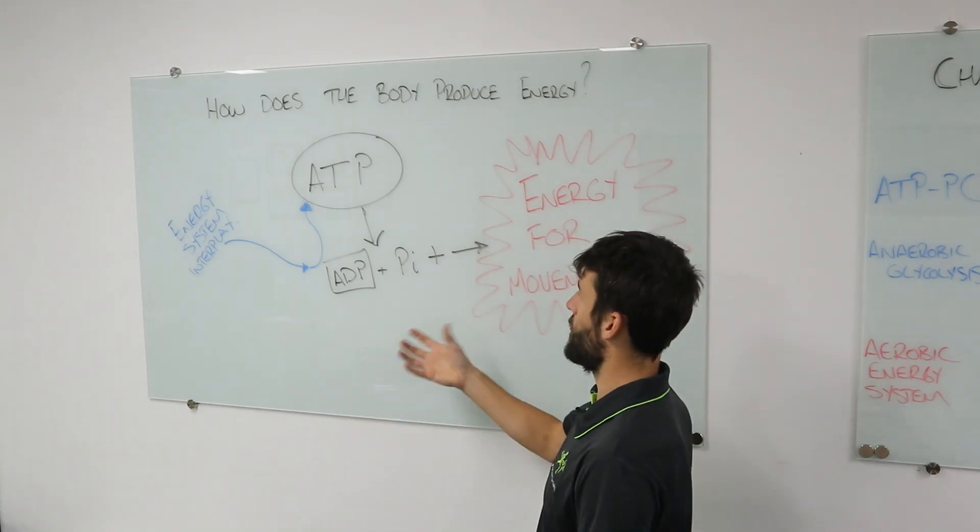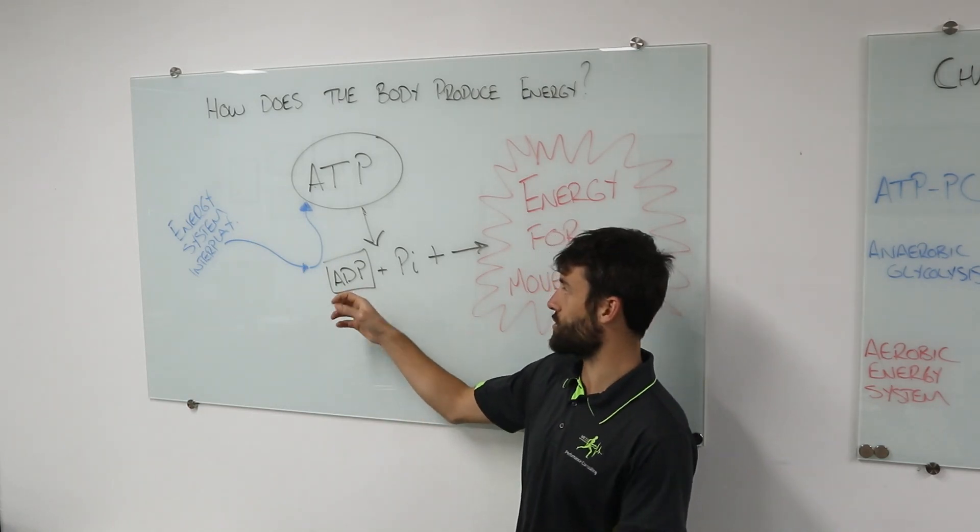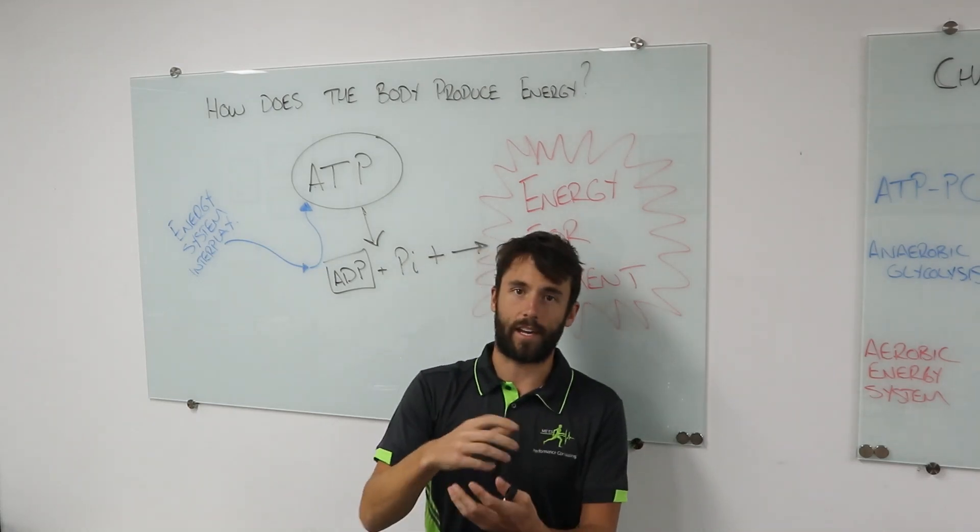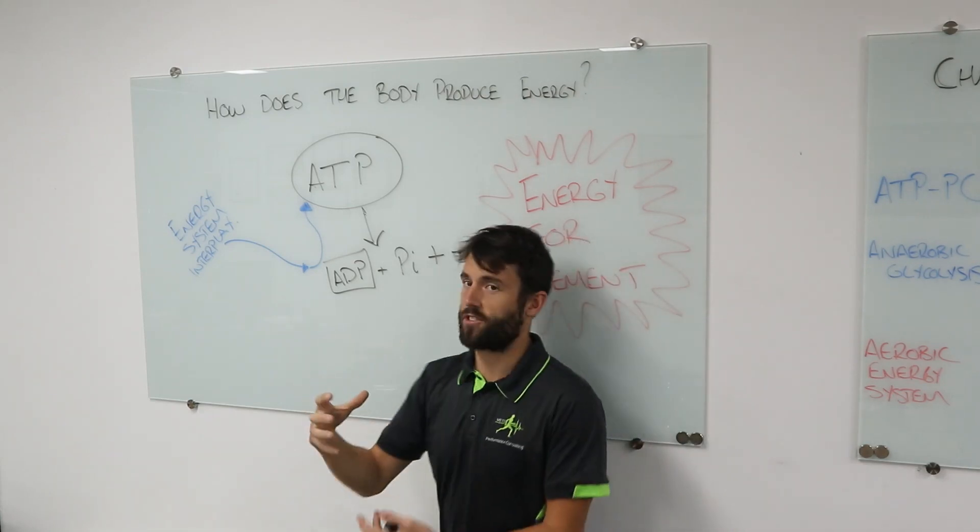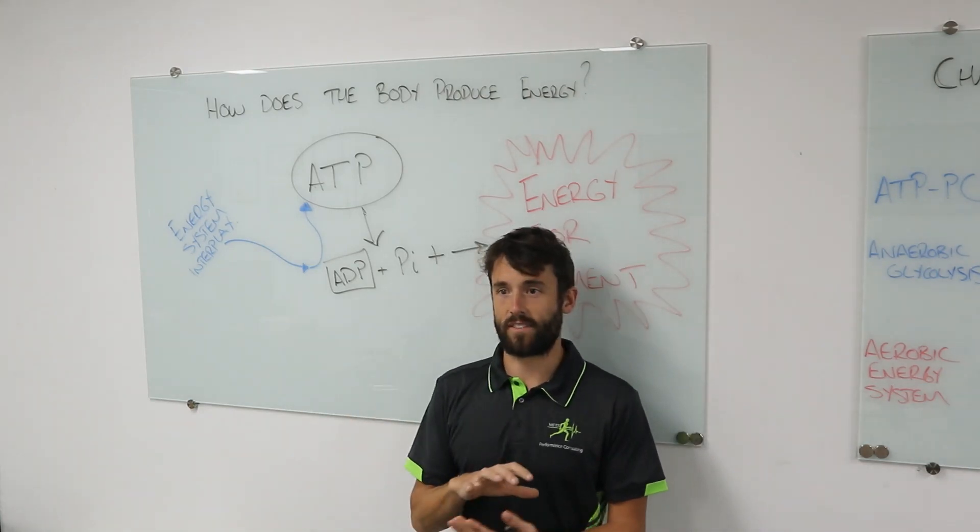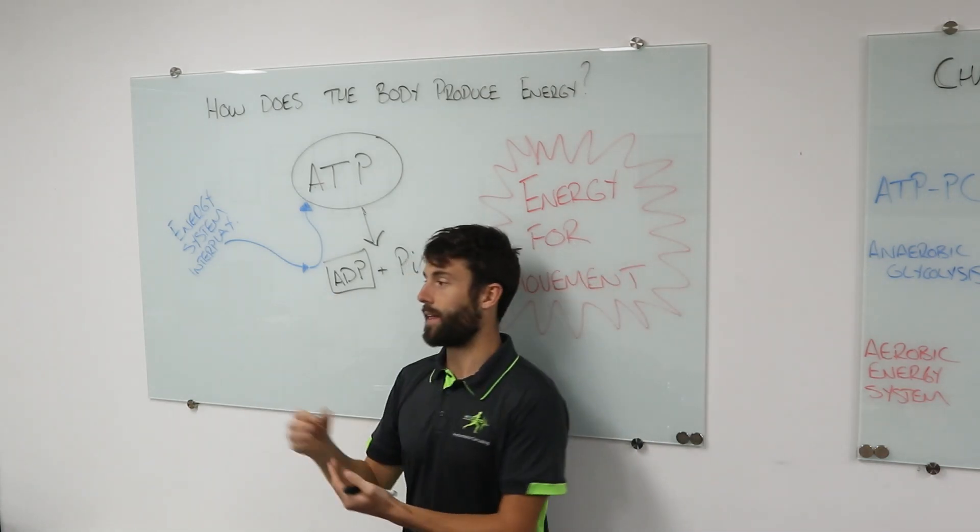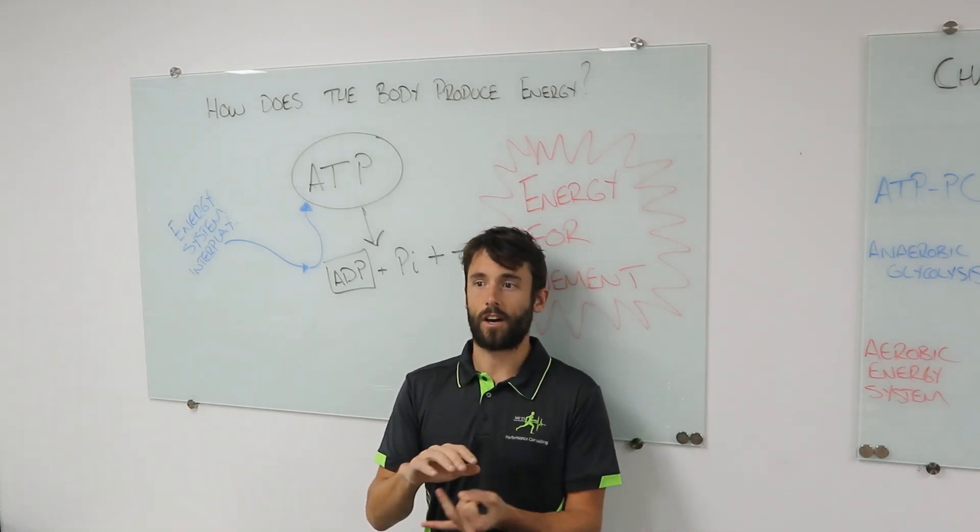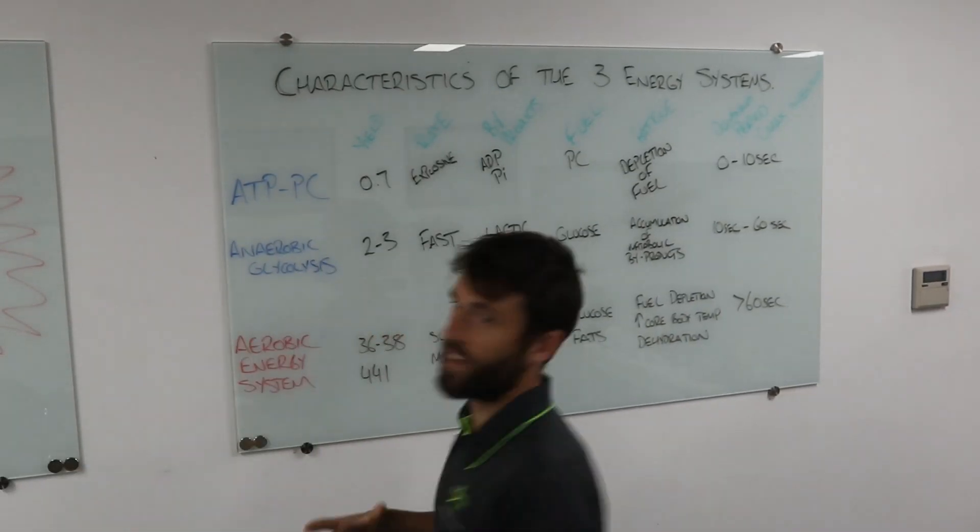What we need to do now is effectively recharge this, so we need to add a phosphate molecule back to get back to this initial ATP so that it can split apart again and give us energy for movement. Our three energy systems work together to complete that process. We'll talk about energy system interplay later, but how they're going to work together depends on the time and the intensity of the activity.